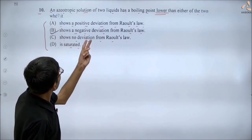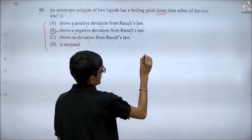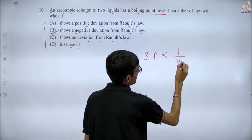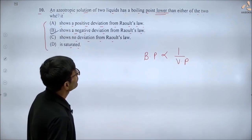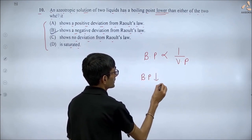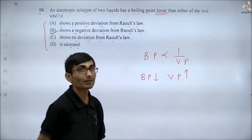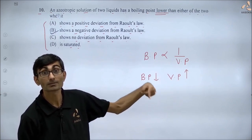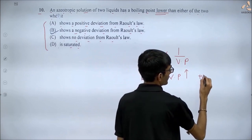This is about boiling point. We know boiling point and vapour pressure have an inverse relation — if the boiling point is low, vapour pressure is high. That means positive deviation from Raoult's law.